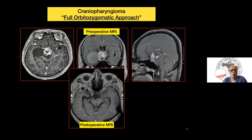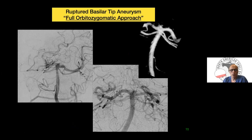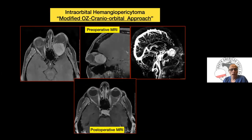This is a case where I used full OZ years ago — nowadays I would only perform the cranio-orbital modified OZ. This gives direct access to the interpedicular cistern with much better control of the basilar artery and its branches, achieving gross total resection. A ruptured basilar tip aneurysm is a perfect indication for cranio-orbital or full OZ, though nowadays I would do either cranio-orbital or just anterior clinoidectomy for a ruptured basilar tip aneurysm. An orbital hemangiopericytoma is a perfect indication for the cranio-orbital approach — you don't even see the brain; you stay over the dura, open the orbital roof, and remove the tumor.